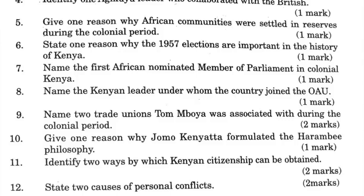Two, Kenya Foundation of Registered Trade Unions. Three, Kenya Federation of Labour. Question 10: Give one reason why Jomo Kenyatta formulated the Harambee philosophy — to promote a sense of mutual responsibility in solving national problems, particularly disease, ignorance, and poverty.